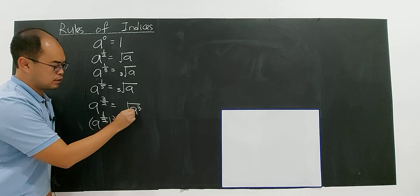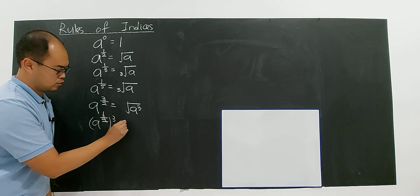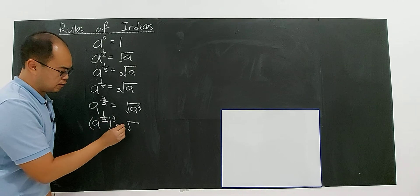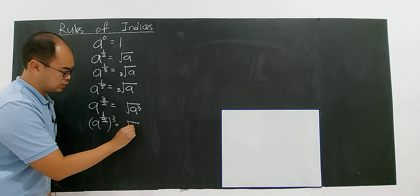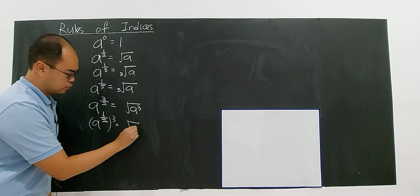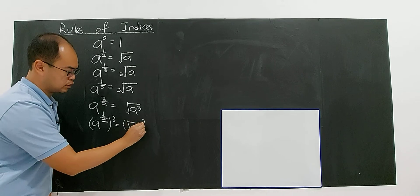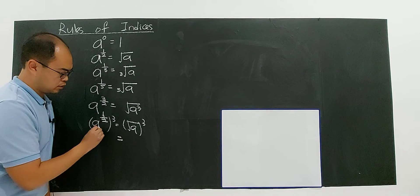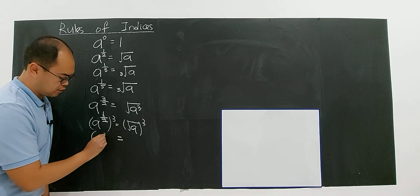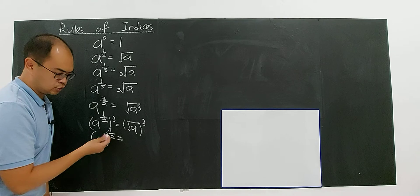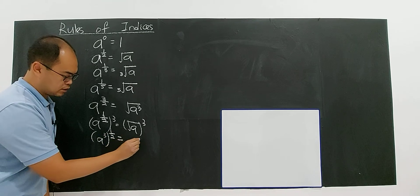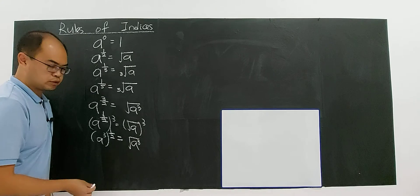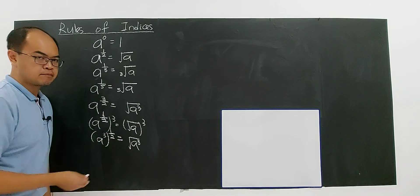If you multiply through, this gives you the square root. Or you can write A to the power of 3, and it can also be written as the square root of A to the power of 3. You can put A to the power of 3 inside and 1 over 2 outside — they can change. So the square root of A to the power of 3 carries the same meaning.